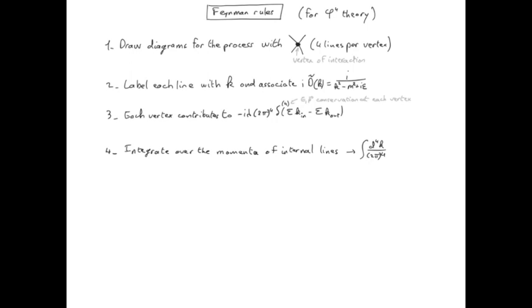The fourth rule is that we integrate over the momenta of internal lines. So an internal line is a line connecting two vertices, so that's at least in second order in lambda. In first order in lambda we don't have such internal lines. And the final amplitude should only depend on the initial and final momenta for the process we are interested in.